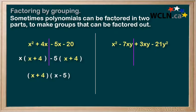On the left-hand side, we can factor out an x. This will leave us with x minus 7y. On the right-hand side, we can common factor out a positive 3y. And this will leave us again with an x minus 7y.